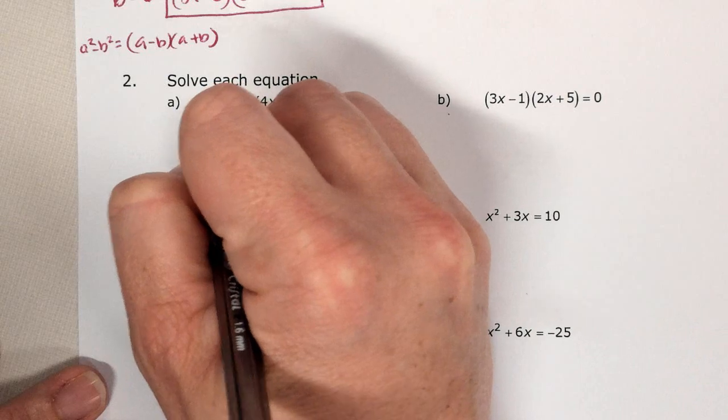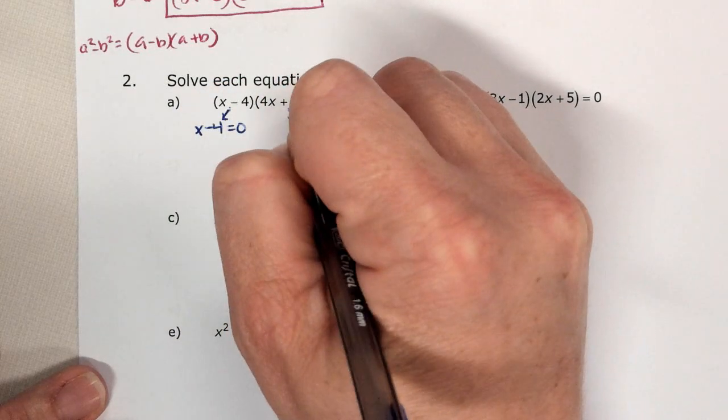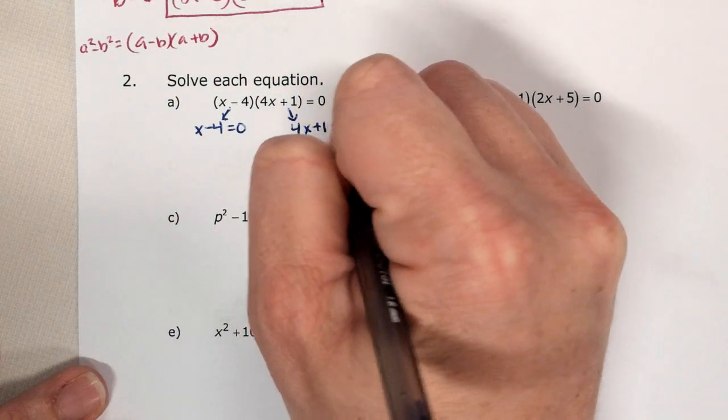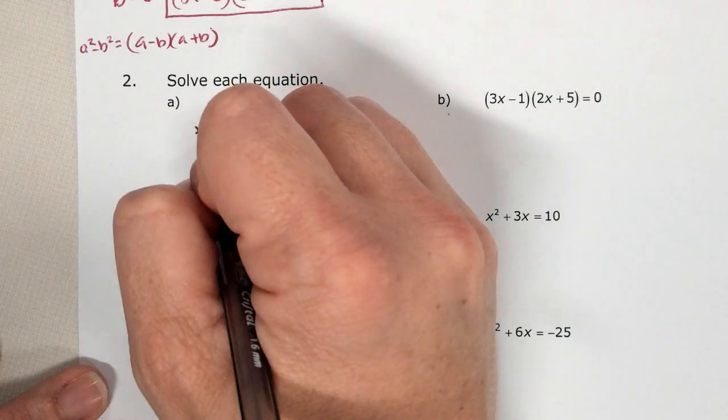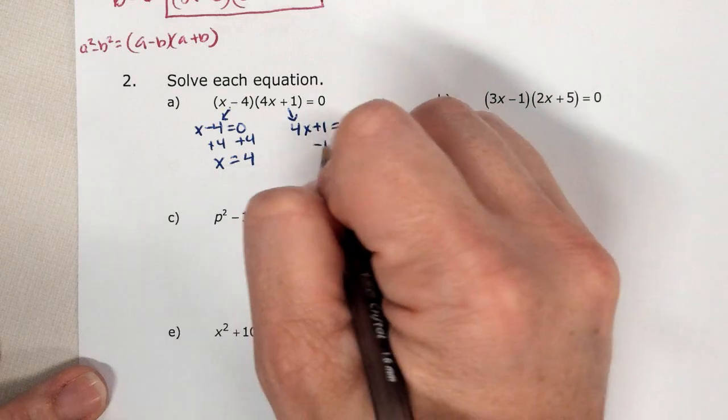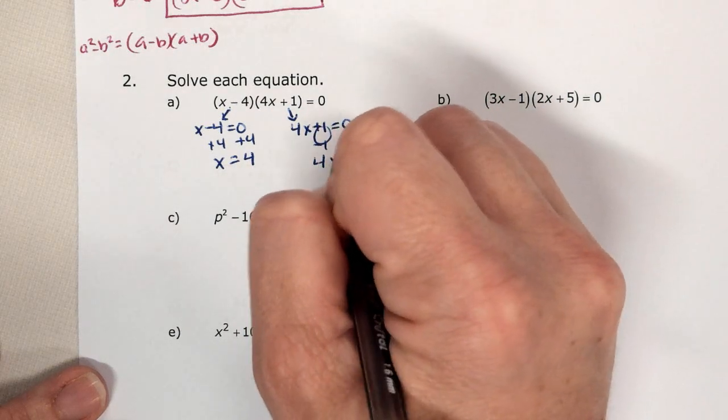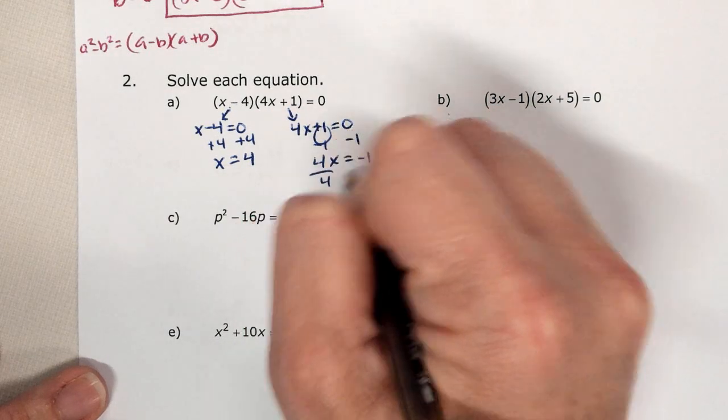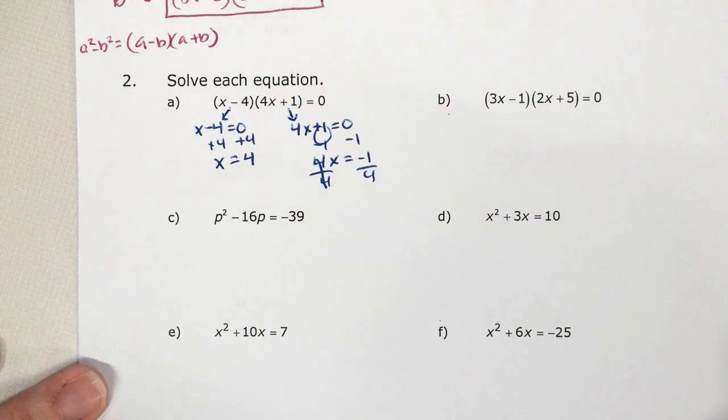So x minus four equals zero. Four x plus one equals zero and solve. Well, how do I get x by itself? Plus four plus four, x equals four. Minus one minus one, four x equals negative one, divided by four, divided by four, and x equals negative one-fourth.